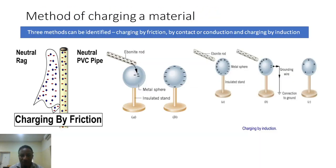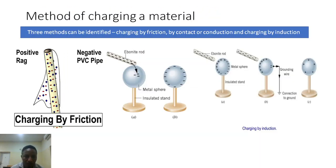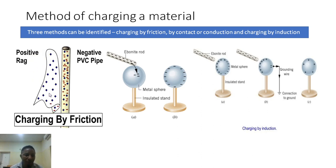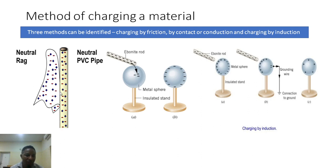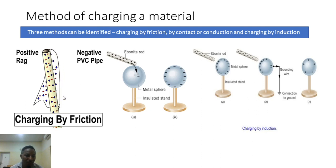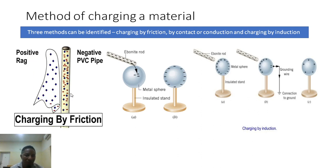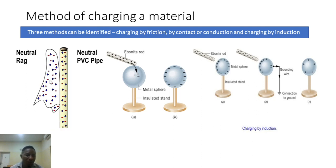Now let's look at the methods of charging a material. We are familiar with friction — rubbing two neutral materials together so one gets to lose its electrons while the other gains them. The one that gains becomes negatively charged while the one that lost is positively charged.